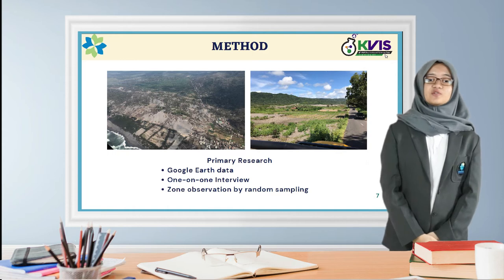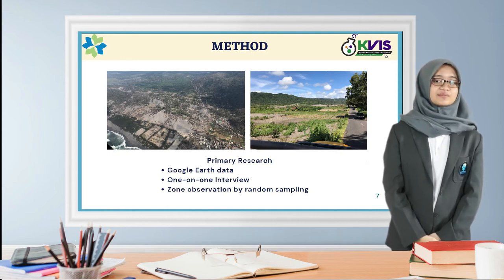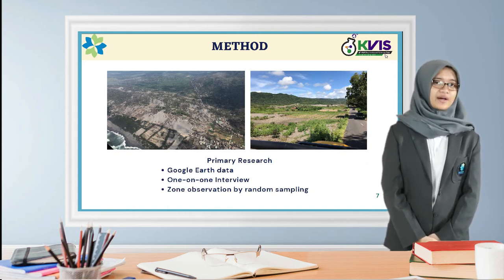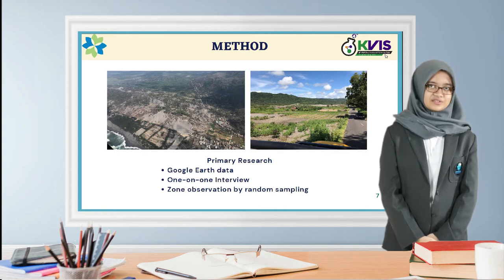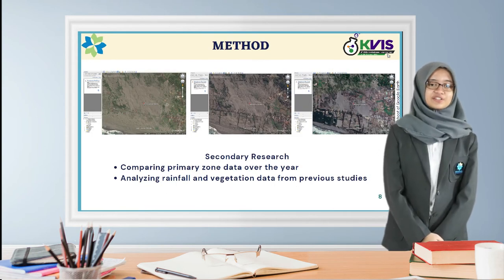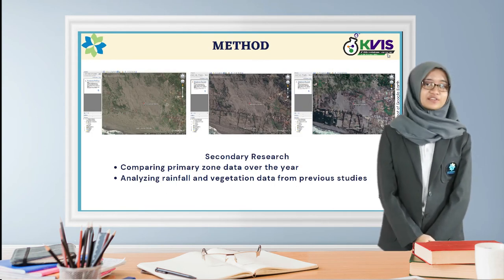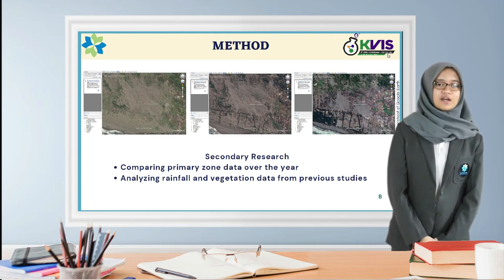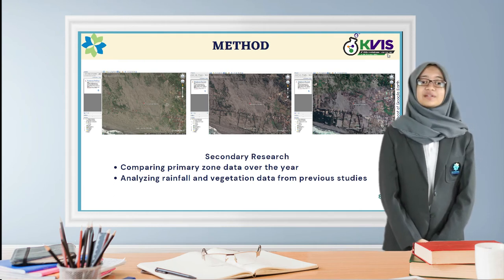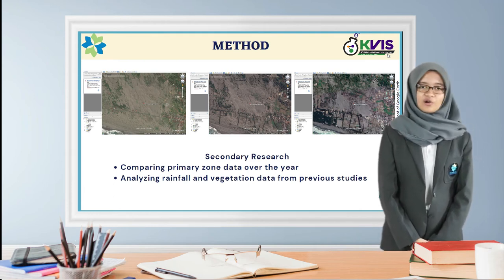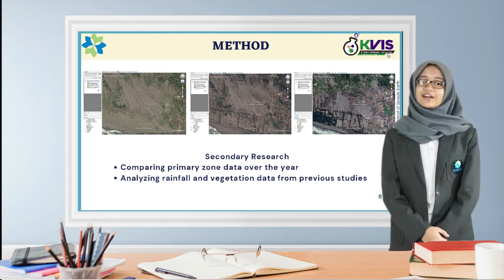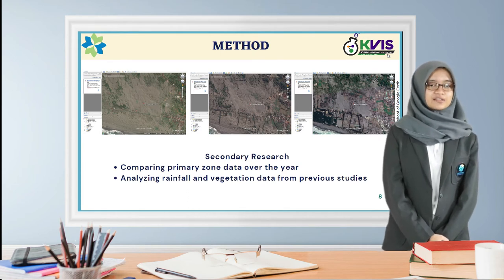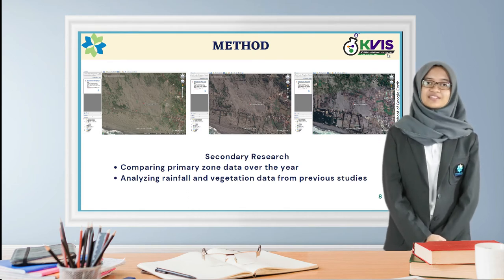The observation was done with random sampling to identify the zoning policy of Parangtritis Sand Dune. This research is also supported by a secondary method, which was done by processing data from Google Earth to compare primary zone area throughout the years. The rainfall and vegetation data were analyzed by reviewing data from previous studies.